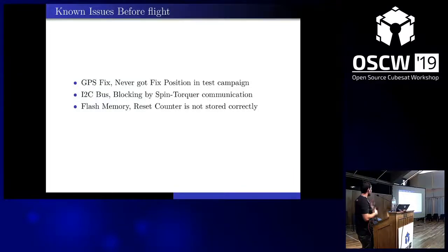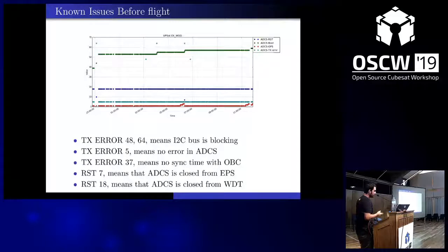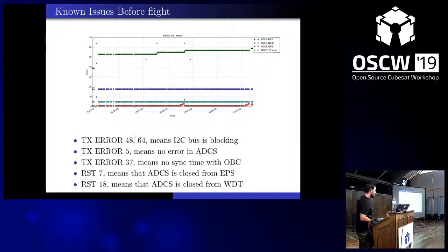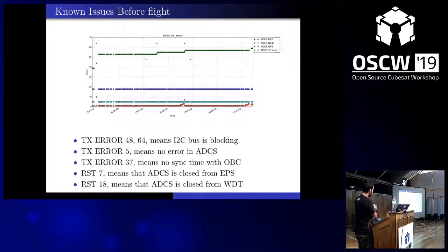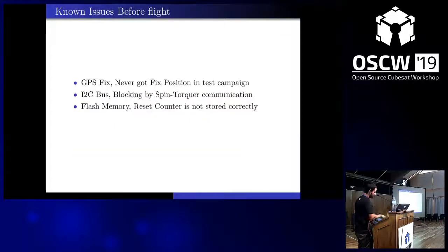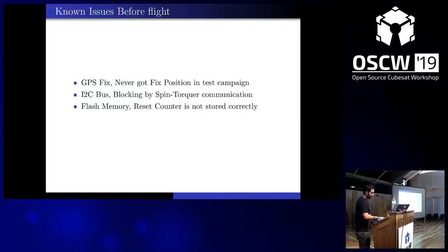Communication with sensors and spin-torquer starts again after the reset. Also, we can see that the ADCS boot counter is not stored correctly — when there is one reset, it measures a lot because the storage of this counter in flash memory is not implemented correctly. The biggest issue not shown in the prior slides is that the GPS never got a fixed position in orbit, although it did get a fixed position during the test campaign. This is a problem in the determination part of ADCS.